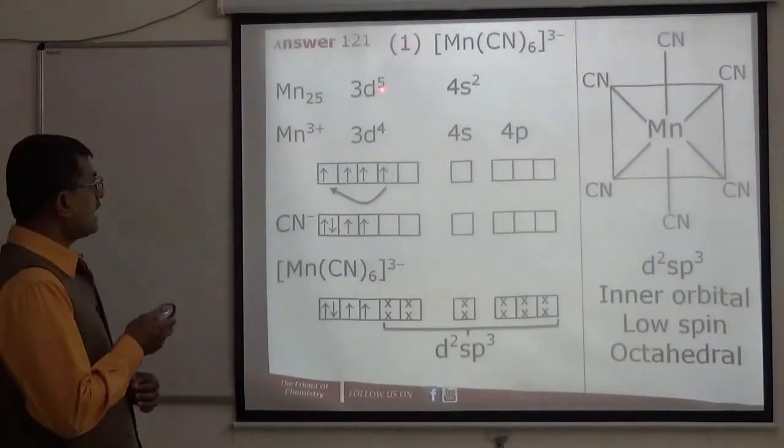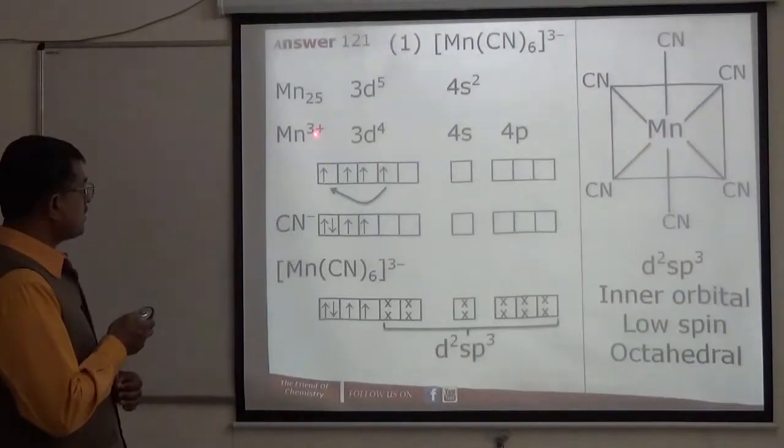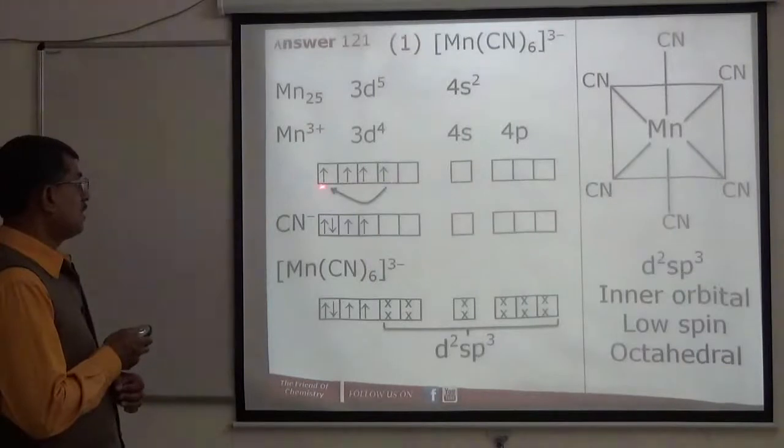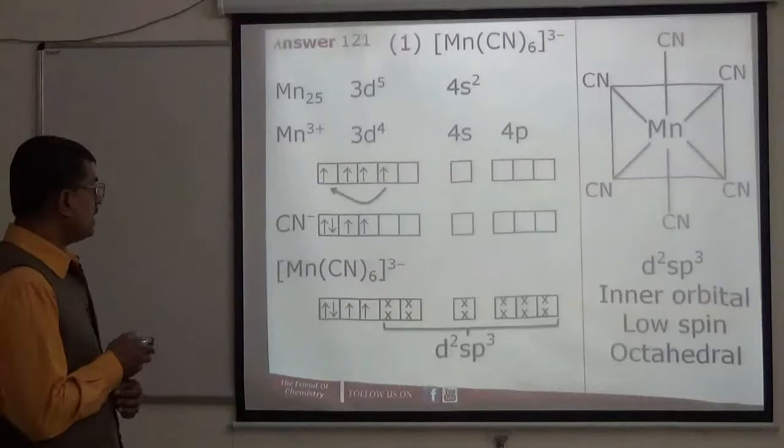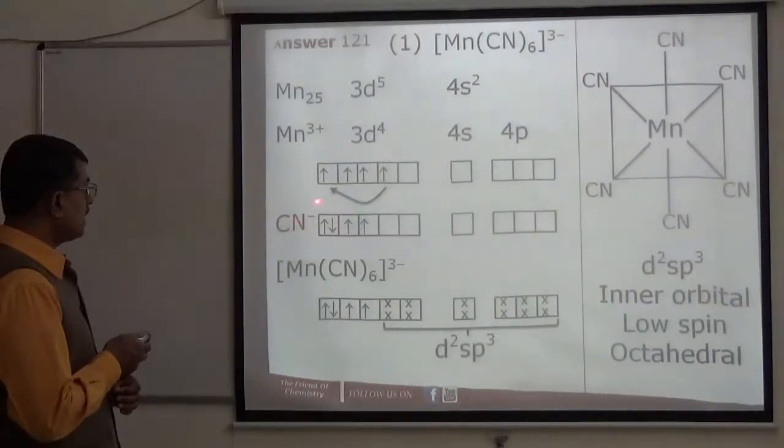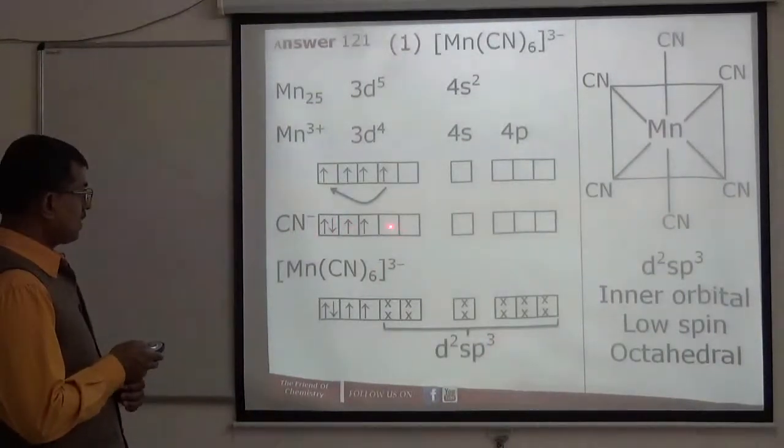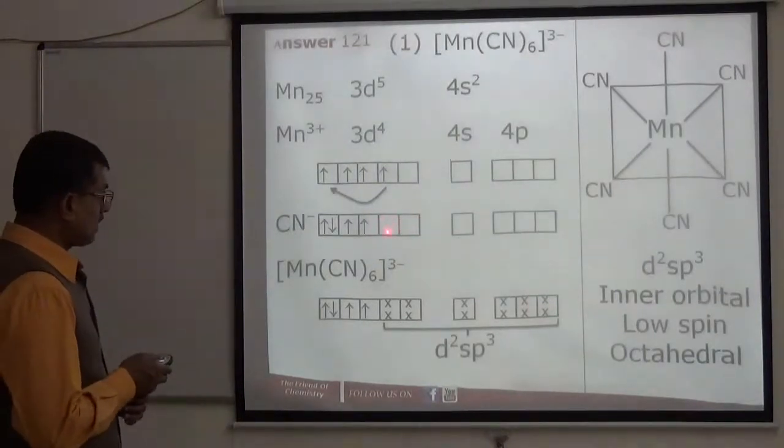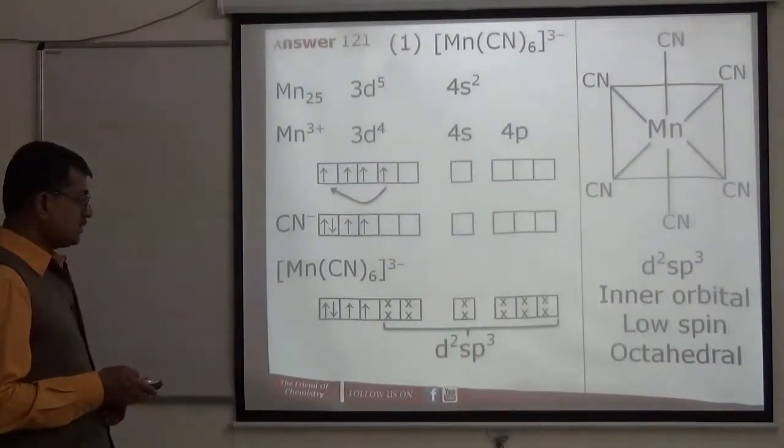In this compound manganese is in plus 3 oxidation state. Two electrons go from here, one from d orbital. So Mn+3 configuration is 3d4 with 4 unpaired electrons. When cyanide ion approaches for complex formation, cyanide is a strong ligand. In presence of strong ligand, electron pairing occurs. So two d orbitals become vacant. Hybridization is d2sp3.